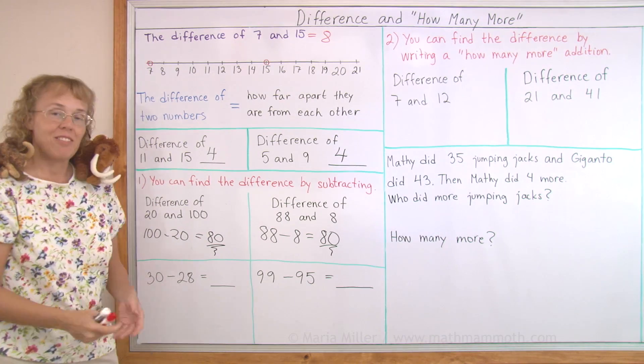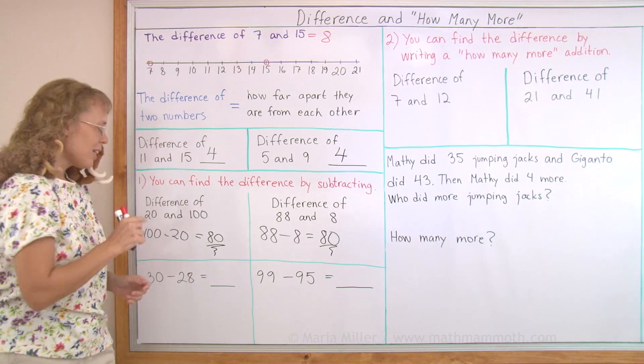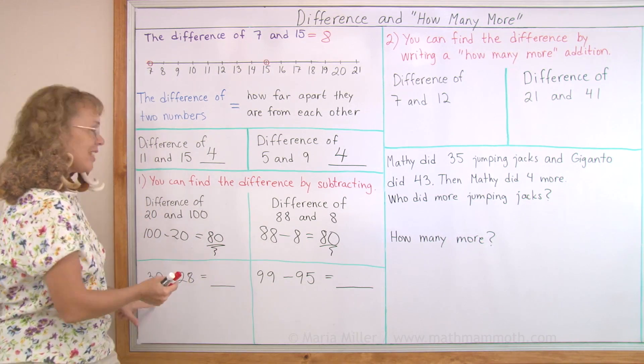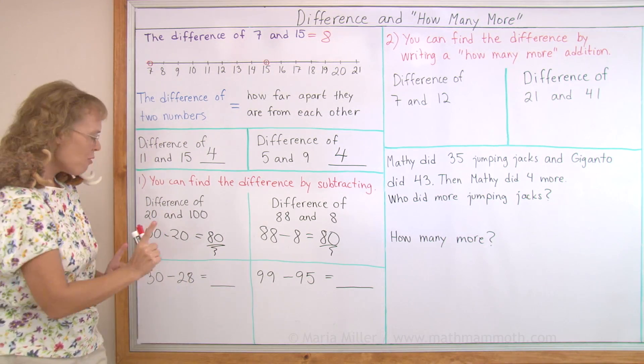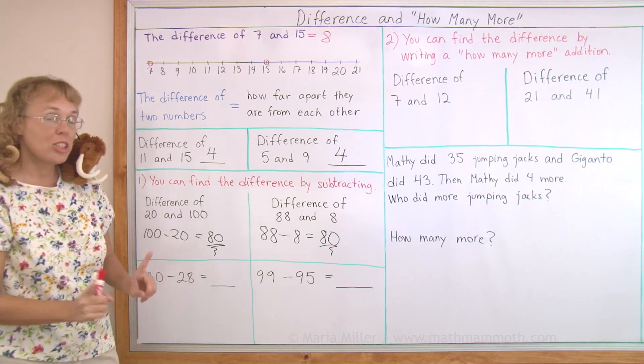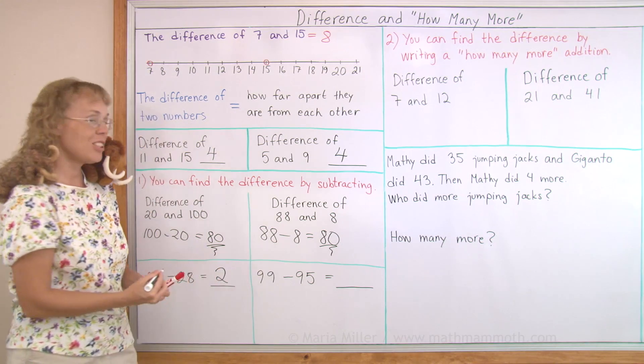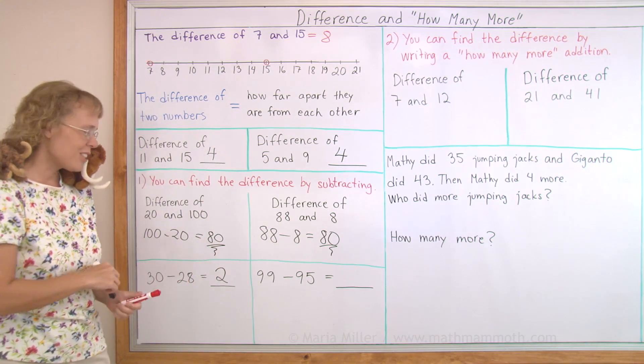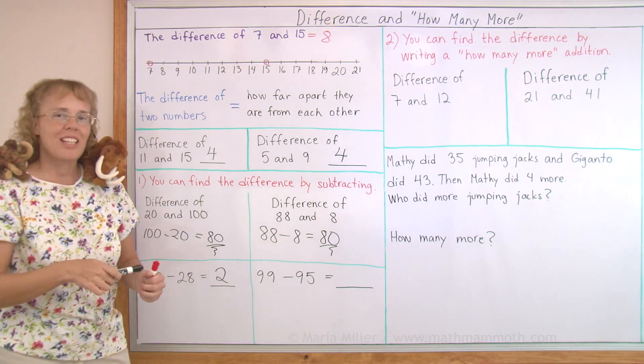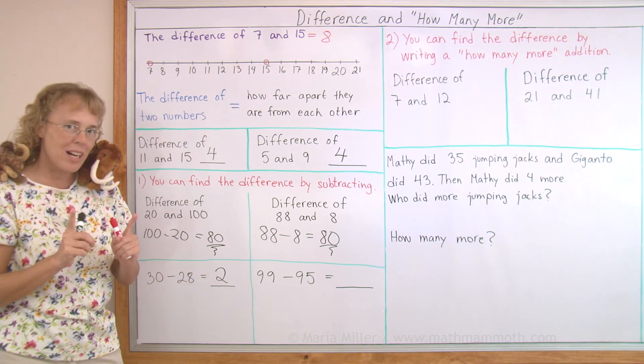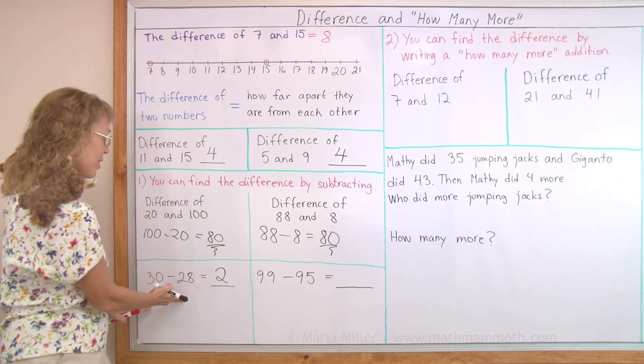Now here I have a subtraction problem, but I'm going to think of it as difference. How far apart are these two numbers from each other? Just two steps. So the answer to the subtraction is 2. In other words, this time, I'm using the idea of how far apart are the numbers to solve the subtraction.